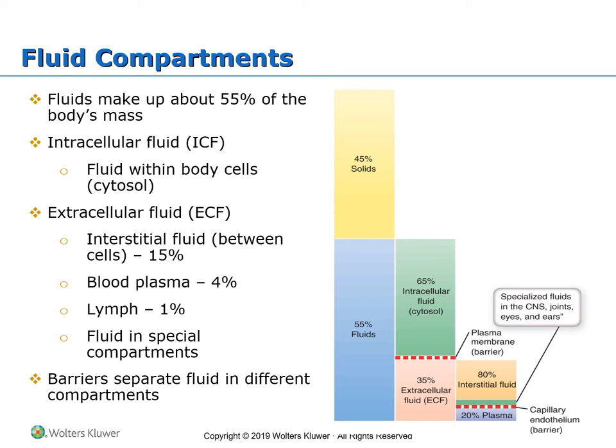We also have fluid in some special compartments. These include the cerebrospinal fluid, the aqueous and vitreous humor of the eye, serous fluid, and synovial fluid found in the joints. Together they make up about 1 to 3% of total body fluids.